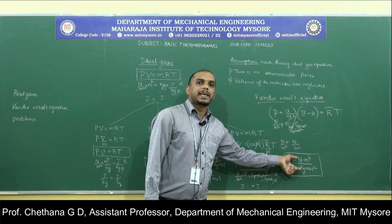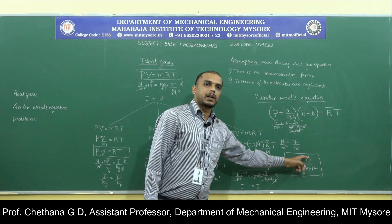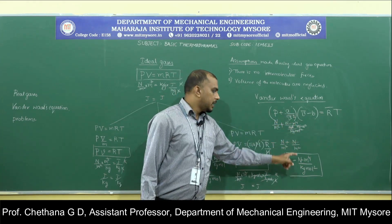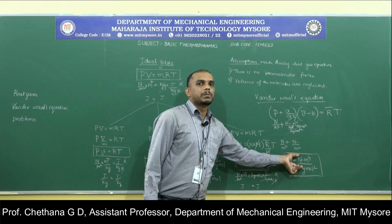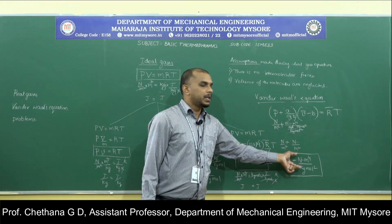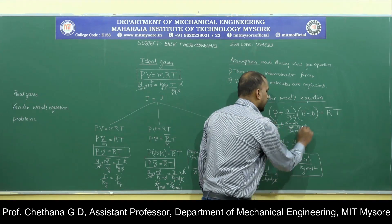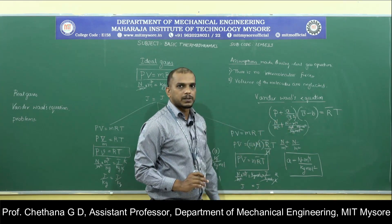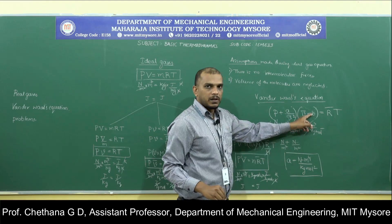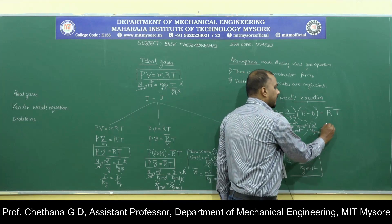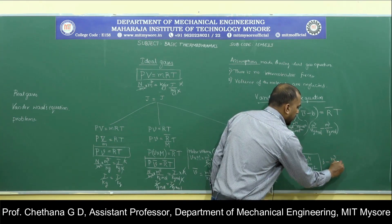In the data handbook, A is given in kilo Newton·meter⁴ per kg-mole squared. Be careful: whenever you substitute it into the equation, multiply by 10³ to convert to Newton·meter⁴ per kg-mole squared. Since V-bar is in meter cube per kg-mole and B is subtracted from V-bar, the unit of B must also be meter cube per kg-mole. In the data handbook, B is already given in meter cube per kg-mole, so just copy it directly.